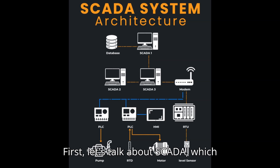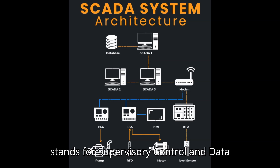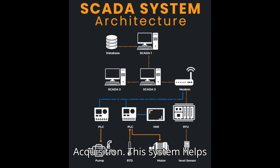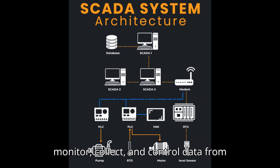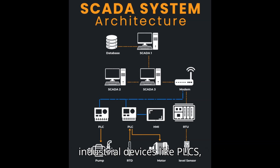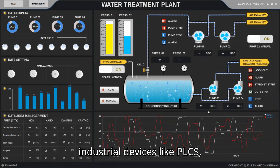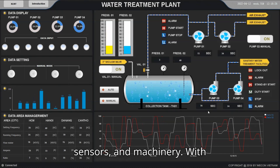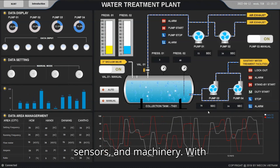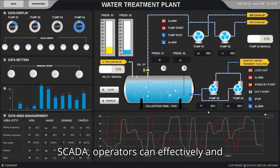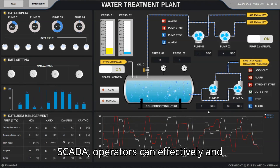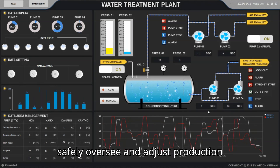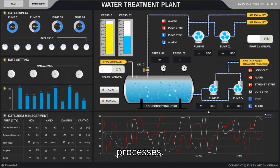Let's talk about SCADA, which stands for Supervisory Control and Data Acquisition. This system helps monitor, collect, and control data from industrial devices like PLCs, sensors, and machinery. With SCADA, operators can effectively and safely oversee and adjust production processes.